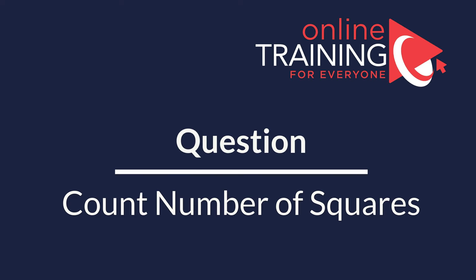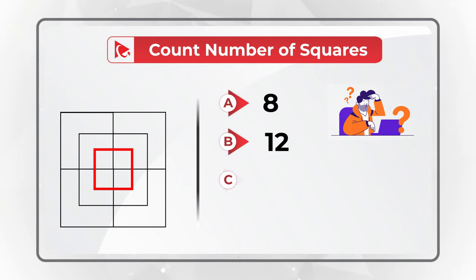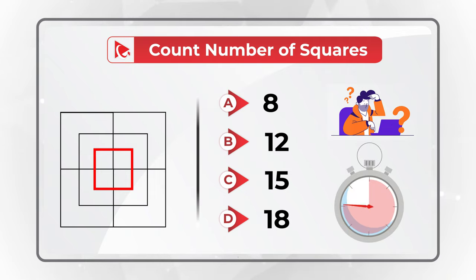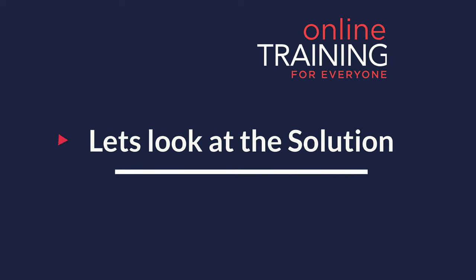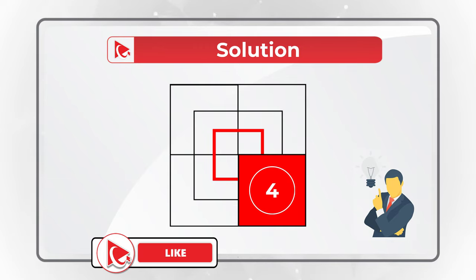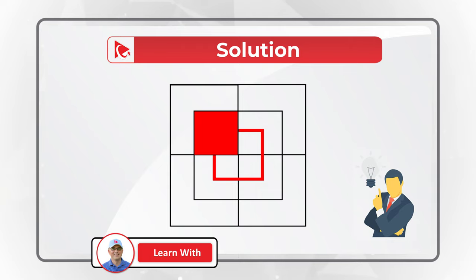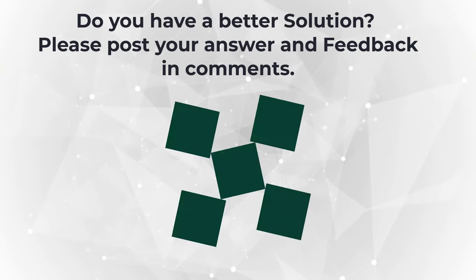Here's one of my favorite questions: you need to count the number of squares in the shape. You have four choices: choice A is 8, choice B is 12, choice C is 15, and choice D is 18. Look closely — hint: look at the squares inside the squares. I counted 15 squares in this picture. Let me show them all: one, two, three, four, five, six, seven, eight, nine, ten, eleven, twelve, thirteen, fourteen, and fifteen.